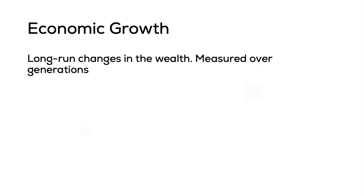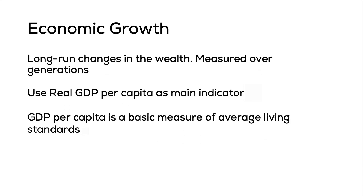Looking at this graph, it is evident that each generation in the U.S. has a higher living standard than the generation before it. The economy might experience ups and downs throughout, but the overall long-run trend is positive. This is what we mean by economic growth — it is the long-run changes in wealth measured over generations. We measure it using real GDP per capita to capture differences in living standards.